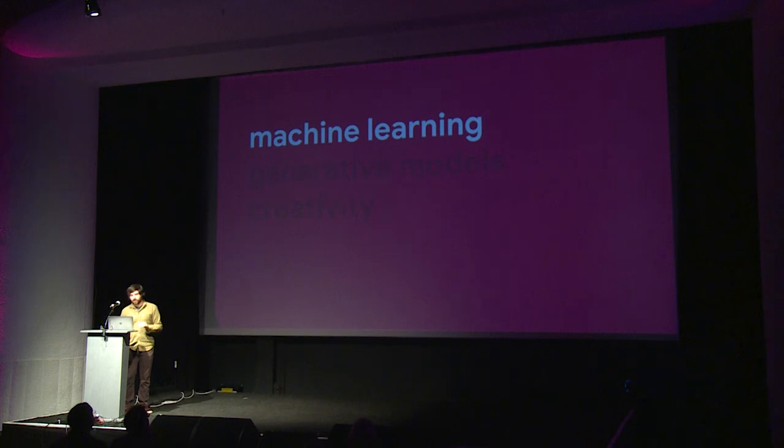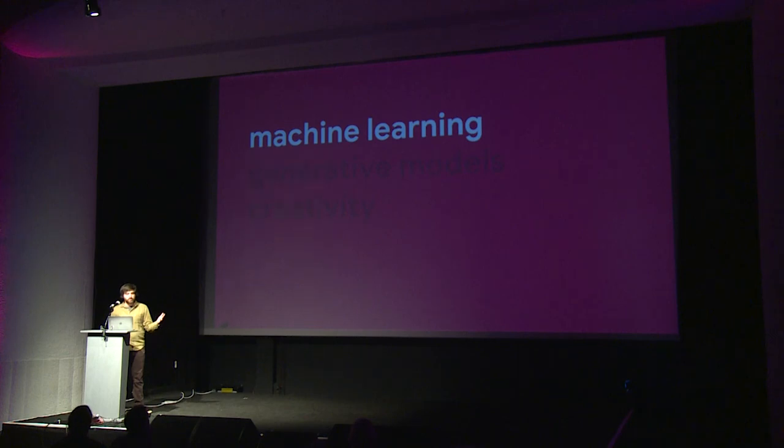That's machine learning in a nutshell, but I haven't shown you anything really related to creativity. The models I showed you are called discriminative — you can give them something and they can discriminate something about it, tell you something about the input. But what about generative models? These are models that instead can actually generate or create something from nothing. Let's look into a few of this type of model, which I think is going to be particularly interesting to us.